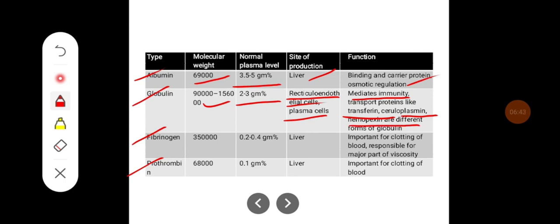Fibrinogen has a molecular weight of around 3.5 lakhs, and its plasma level ranges between 0.2 to 0.4 gram percent. It is produced in the liver and is an important clotting factor for blood clotting.